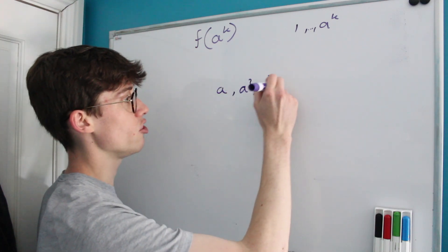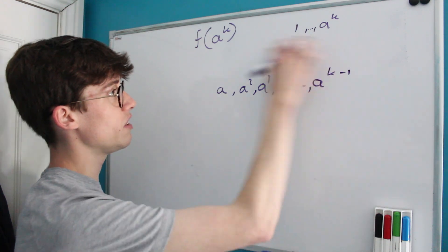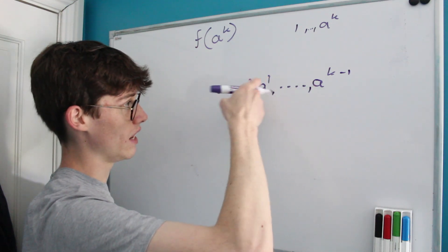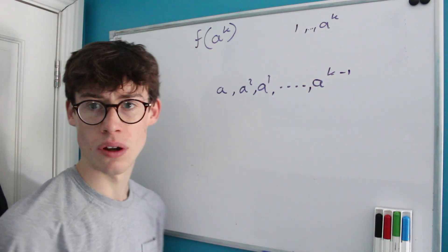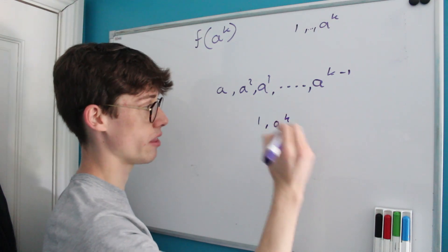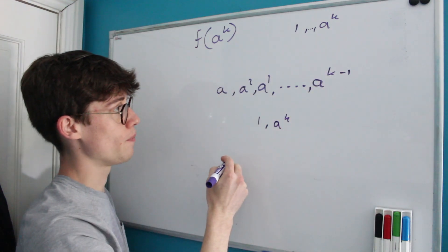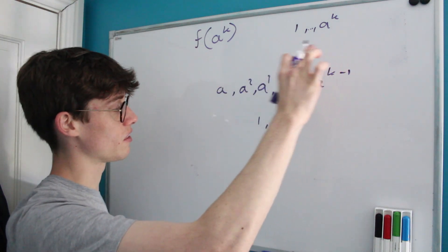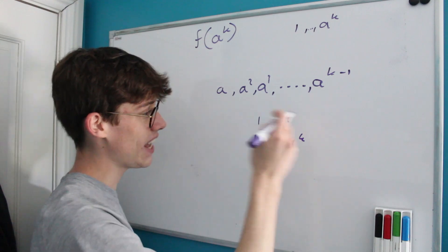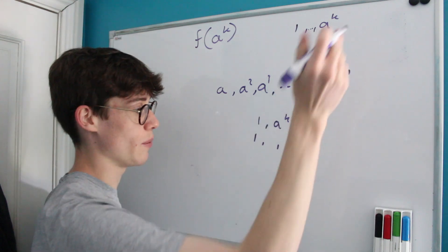The factors in between are a, a², a³, ..., a^(k−1). These can appear in any order as long as powers stay increasing between 1 and a^k. Our first possible list is choosing nothing from these middle terms, leaving just {1, a^k}. The next possibility is choosing one term — giving lists like {1, a, a^k}, {1, a², a^k}, up to {1, a^(k−1), a^k}.